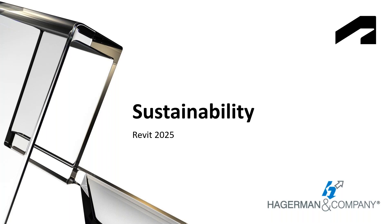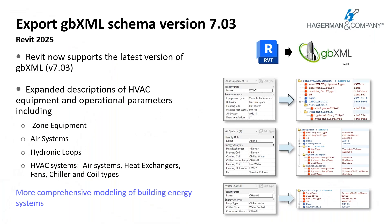That was a lot of stuff for design productivity. Now let's look at our sustainability improvements. The GBXML schema has been updated to include extended HVAC system data. GBXML export will now include zone equipment, air systems, and water loops. This will ensure more comprehensive modeling of building energy systems.